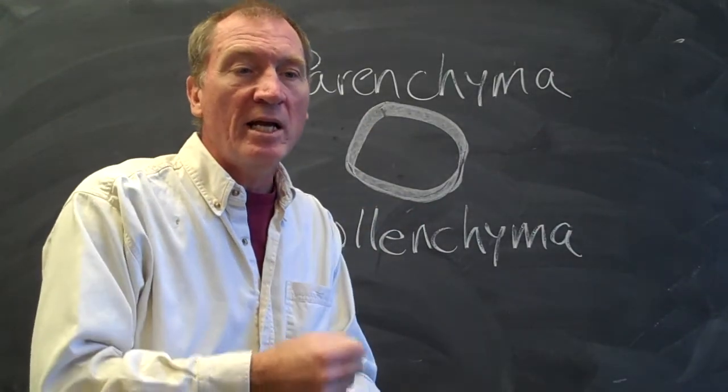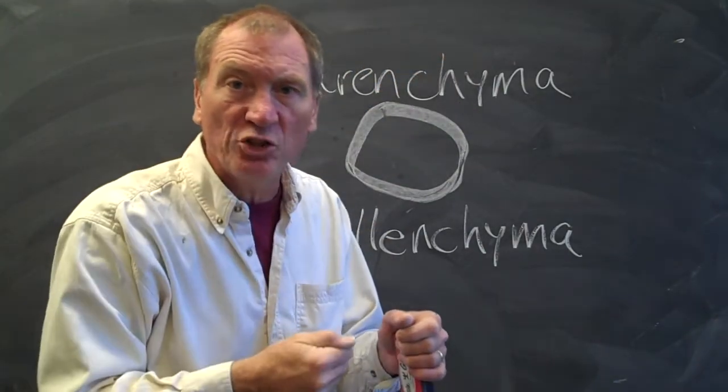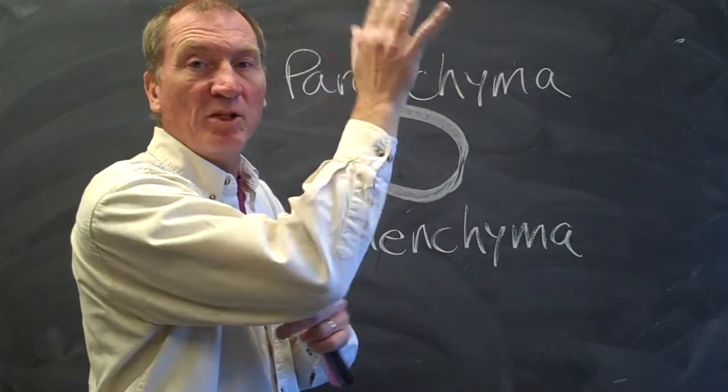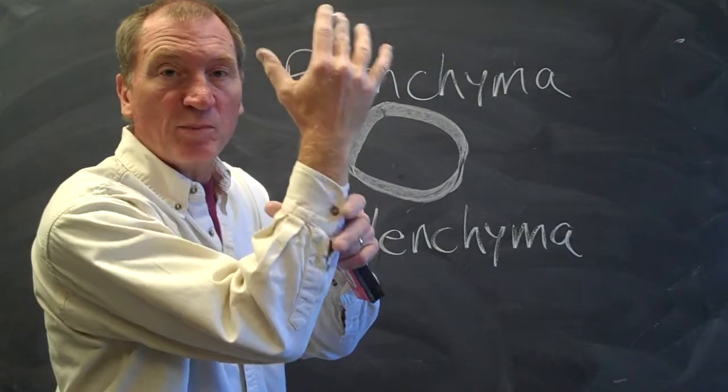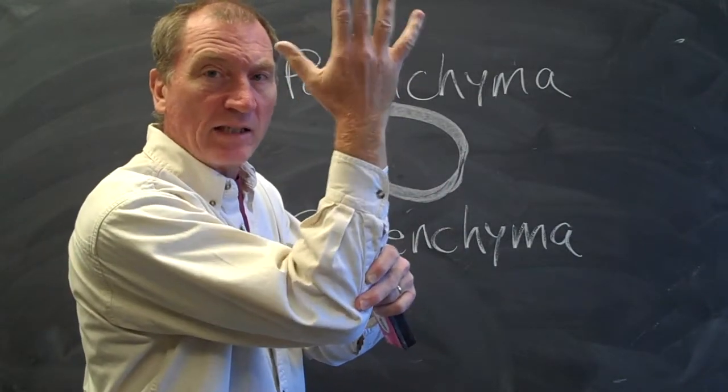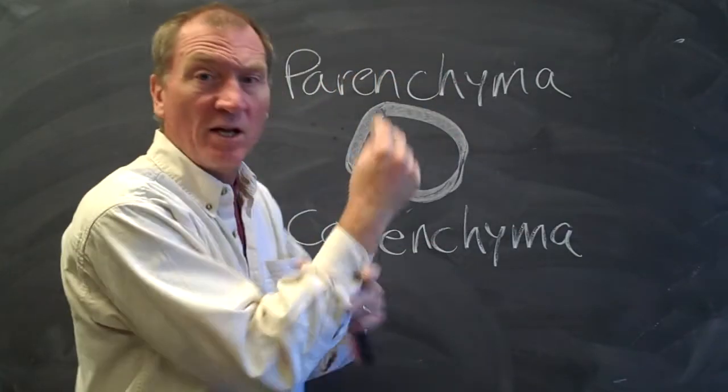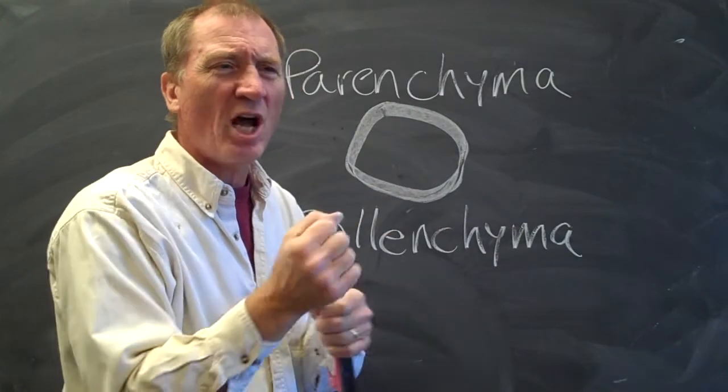What's cool about colenchyma is they can form strands in the plant, like the strands that you pull down a celery stalk. And if a plant stem is moving in the breeze, then these colenchyma cells can respond by thickening even more to provide more rigidity for that stem so it can stand up to the wind. Because they're alive, they can respond to external stimulus and get thicker. But they're not hard. They provide a flexible strength.